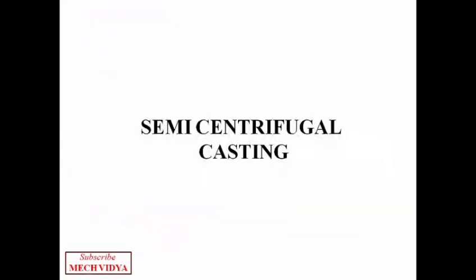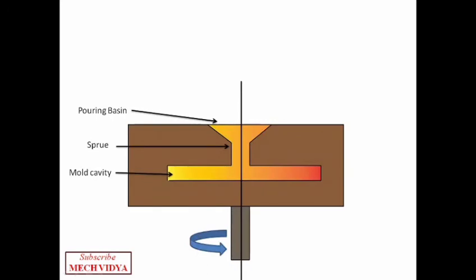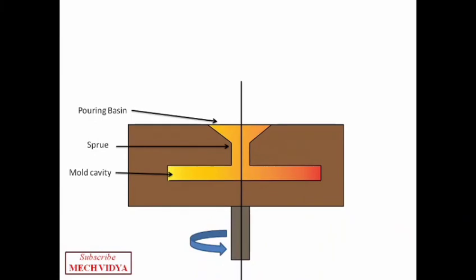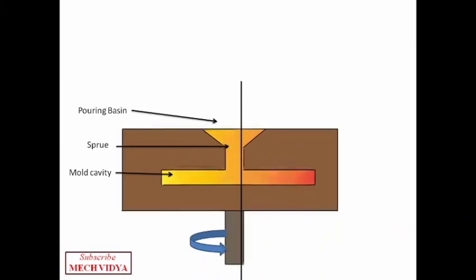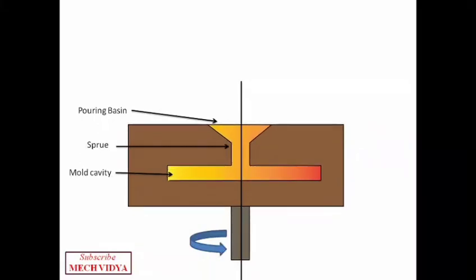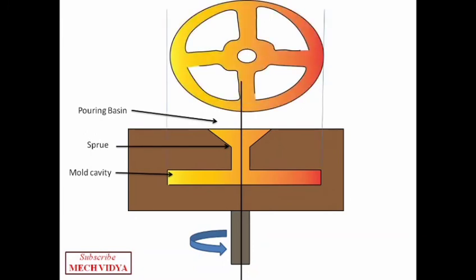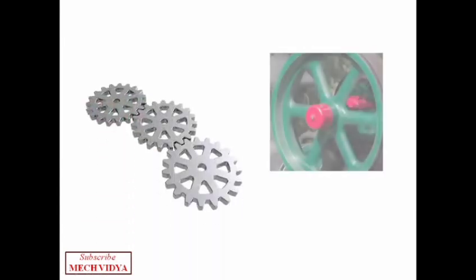So next let us proceed to semi-centrifugal casting, which is the second type of centrifugal casting. It also works on the same principle of centrifugal force. However, the only difference is that the mold rotates with respect to a vertical axis here. In the first case, we saw that in true centrifugal casting the mold rotates with respect to a horizontal axis, but here the rotation will be with respect to a vertical axis like this. The molten metal is poured in the pouring basin, which then flows through the sprue and finally reaches the mold cavity. Then the entire mold is rotated. This is the top view of the part that has been produced using this process. Usually gears, wheels, etc. can be produced using this technique.